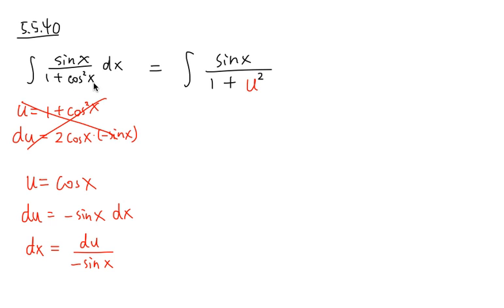So once again, the cosine x, it's a u part. Cosine square x means we have u to the second power. And now, for the dx, it's going to be du over negative sine x. And as we can see, the sine x here can cancel out with the sine x here.